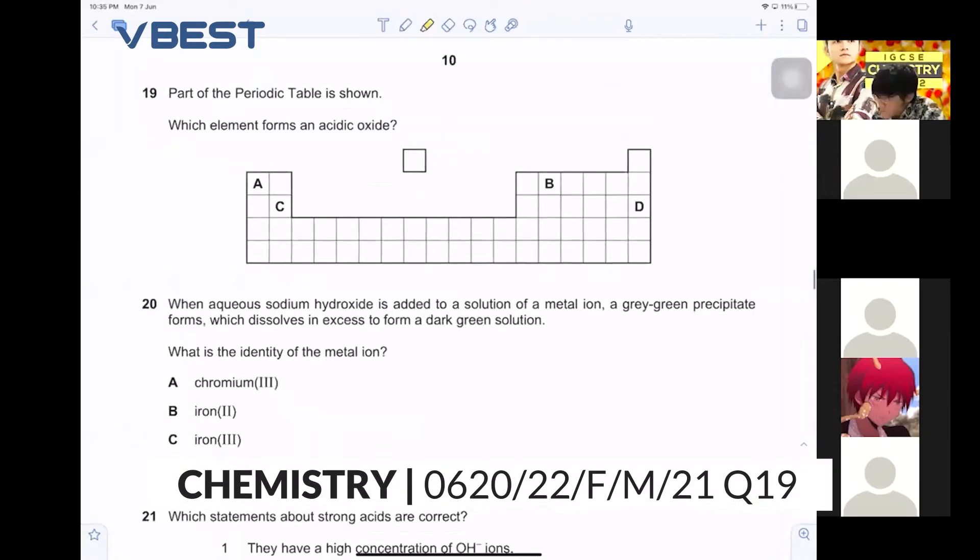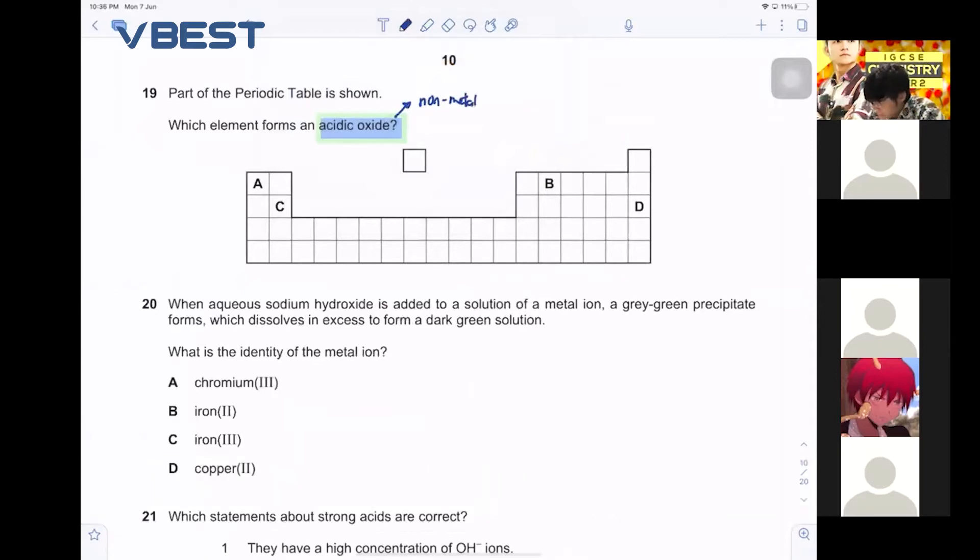Okay, let's continue. Acidic oxide. When we have acidic oxide, remember, acidic oxide is basically a non-metal oxide. Okay, what do you mean by non-metal oxide? So non-metal oxide must be towards your right.